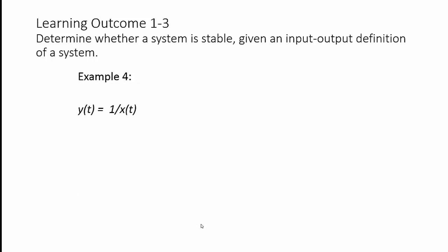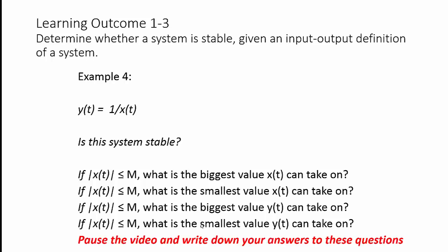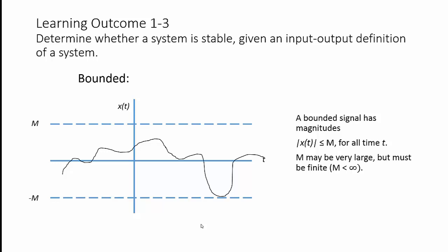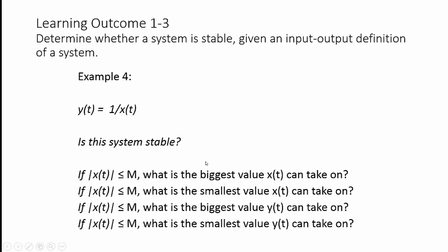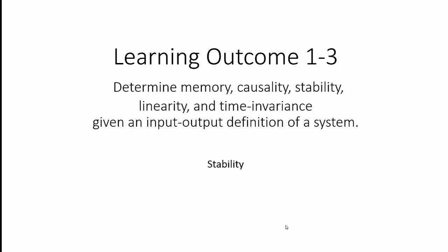A fourth example — this one's a little tricky; you've got to know your math. Is the system stable? Think about the four questions and write down your answers. Go back to the bounded signal and look at the value when the amplitude is zero. If our amplitude is zero, that's going to affect these values. y(t) will go to positive infinity as we approach zero from the positive side, and go to negative infinity approaching zero from the negative side. So even though it's a bounded input, we're dividing by zero, and the system is not stable.